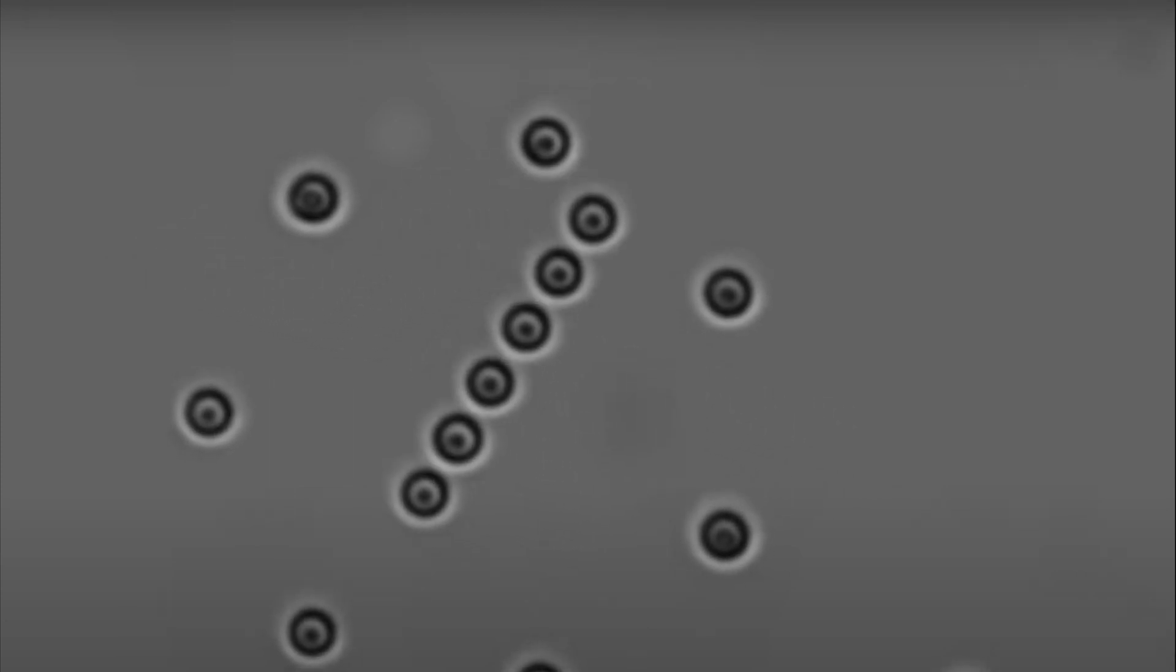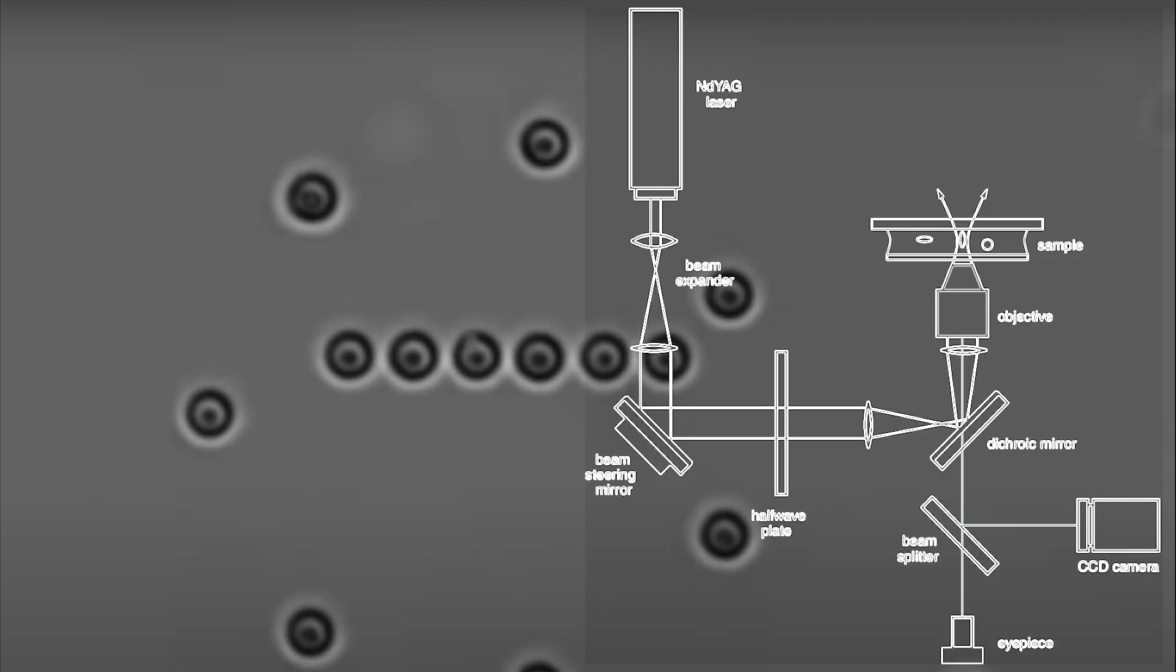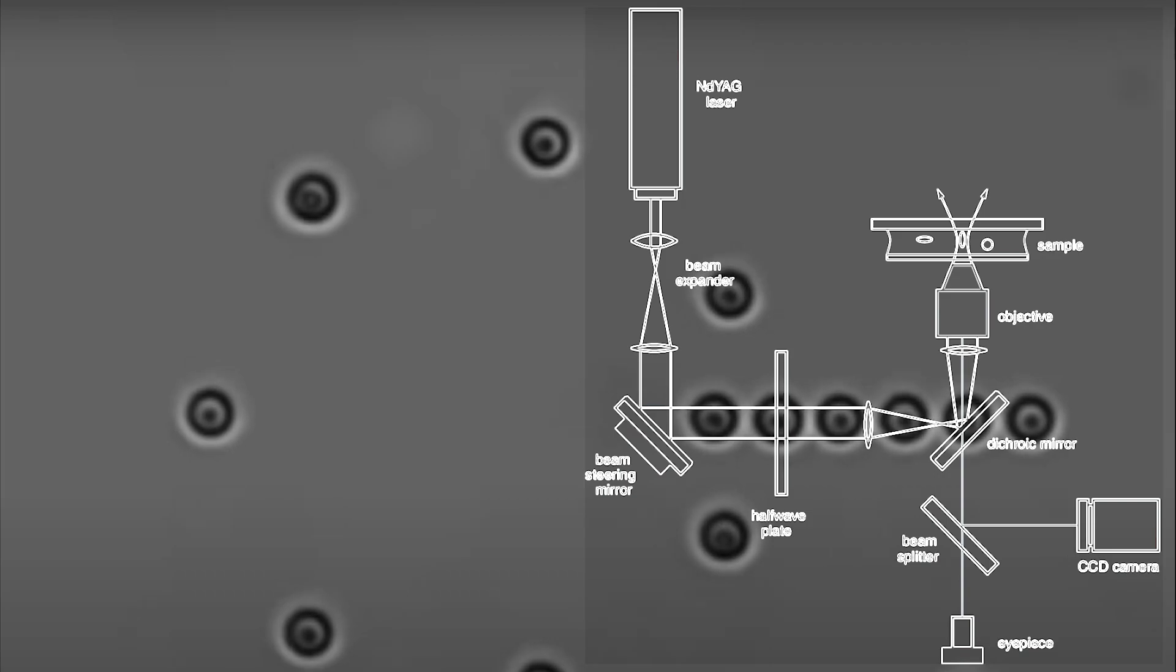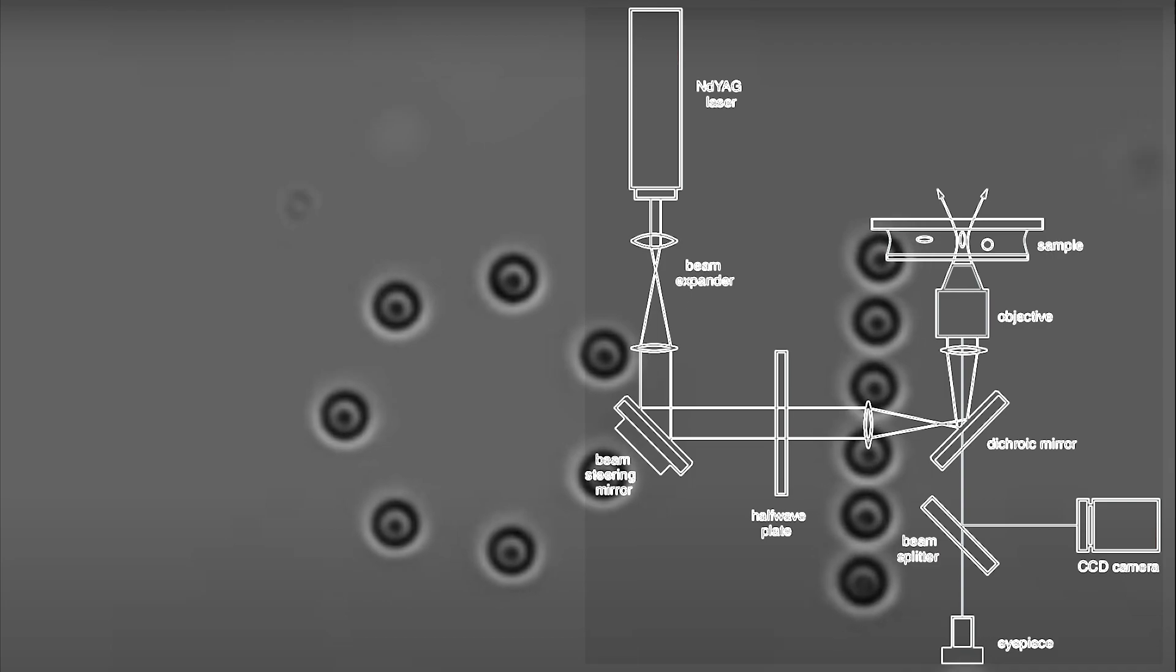Most optical tweezers setups include the following components: a laser, usually a neodymium yttrium aluminum garnet or infrared YAG laser; you'll need a microscope, optics for steering the laser beam, and a position detector like a quadrant photodiode.